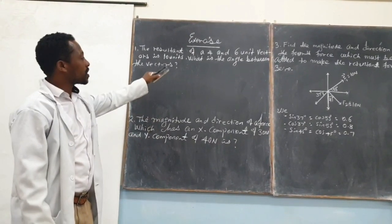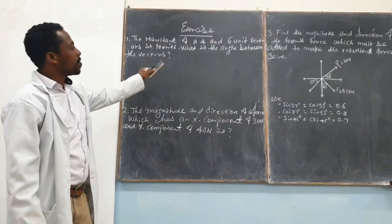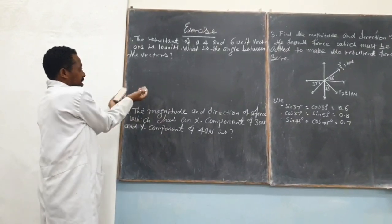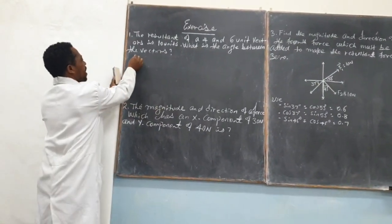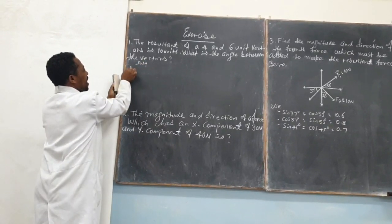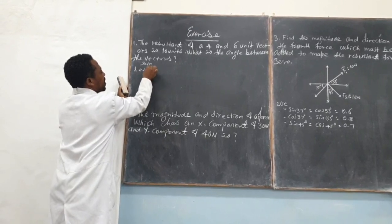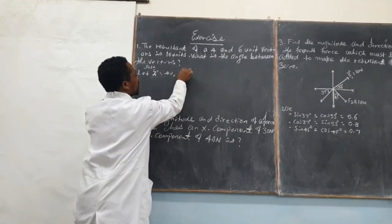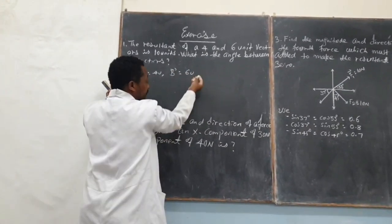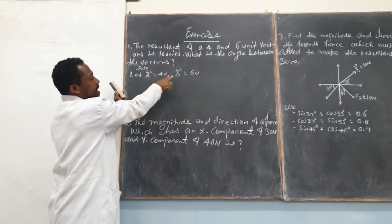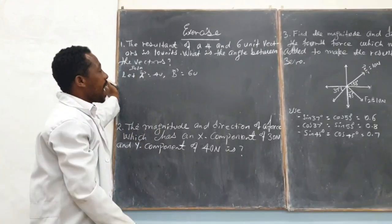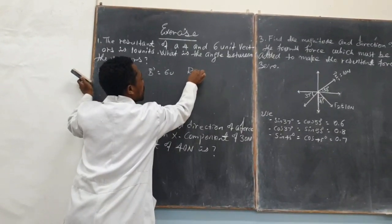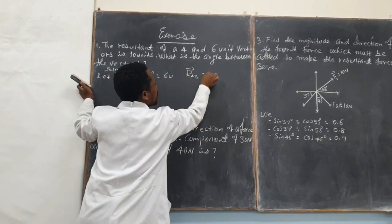To do such a problem, we have to use the cosine law. Let's start. Let vector A is 4 units, vector B is 6 units, and the resultant of vector A and vector B is given as 10 units. Let R_AB = 10 units.